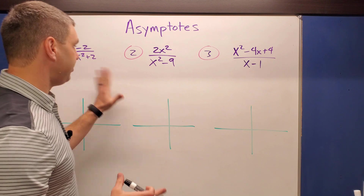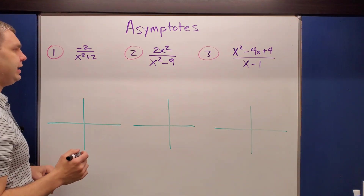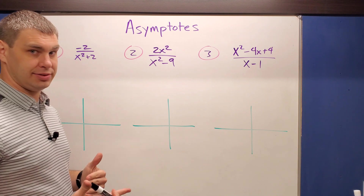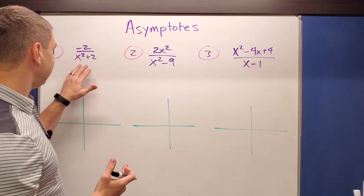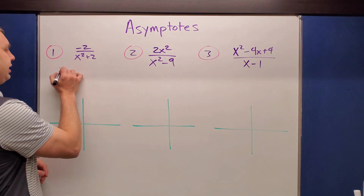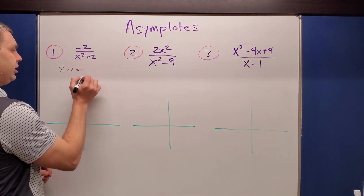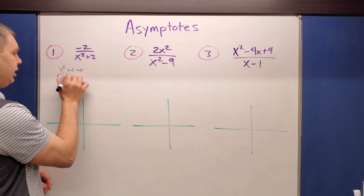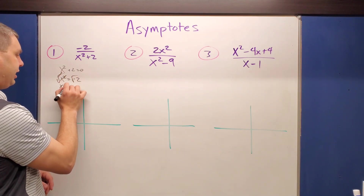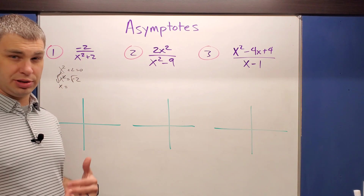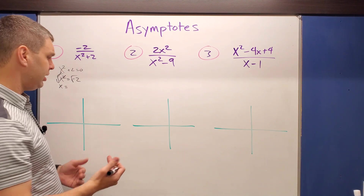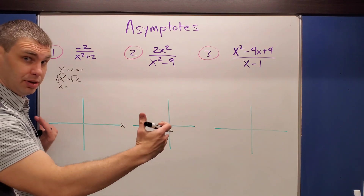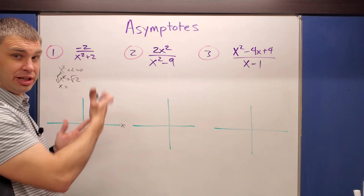We're going to graph a few examples. The first is negative two over x² plus two. Checking for vertical asymptotes, I set the denominator equal to zero: x² plus two equals zero, so x² equals negative two. Taking the square root gives x equals plus or minus the square root of negative two — an imaginary number. Since we work on the real number line, there are no vertical asymptotes.